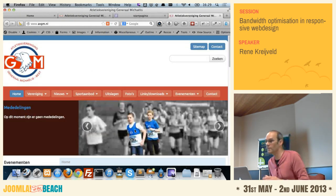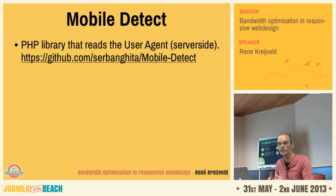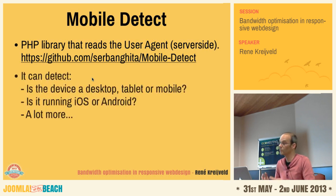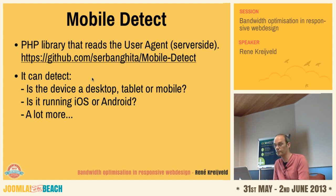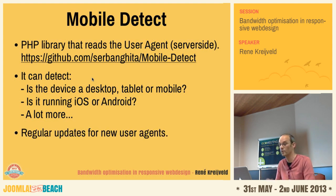There's a PHP library available that reads the user agent on the server side. It's available on GitHub and it's called Mobile Detect. It can detect if the device is a desktop, tablet, or mobile. It can also detect if the device is running iOS, Android, or BlackBerry — it can detect a whole lot more. There are regular updates for new user agents, because when a company builds a new mobile phone a new user agent string is defined.